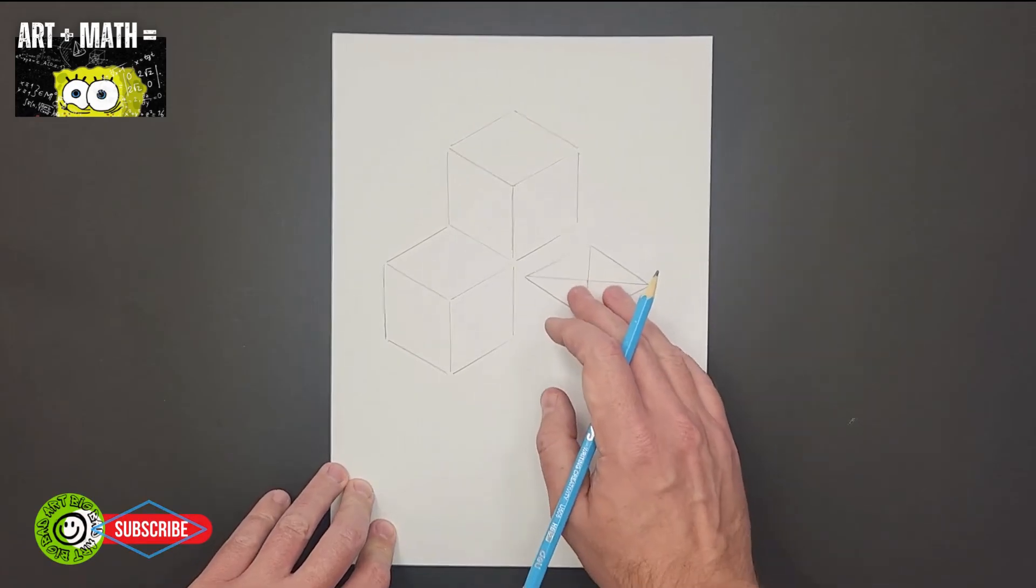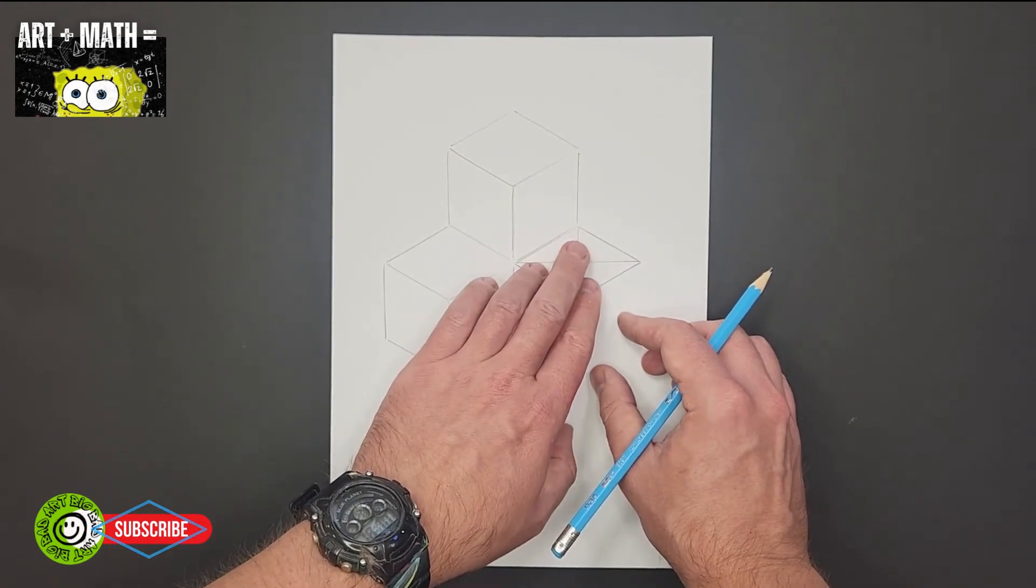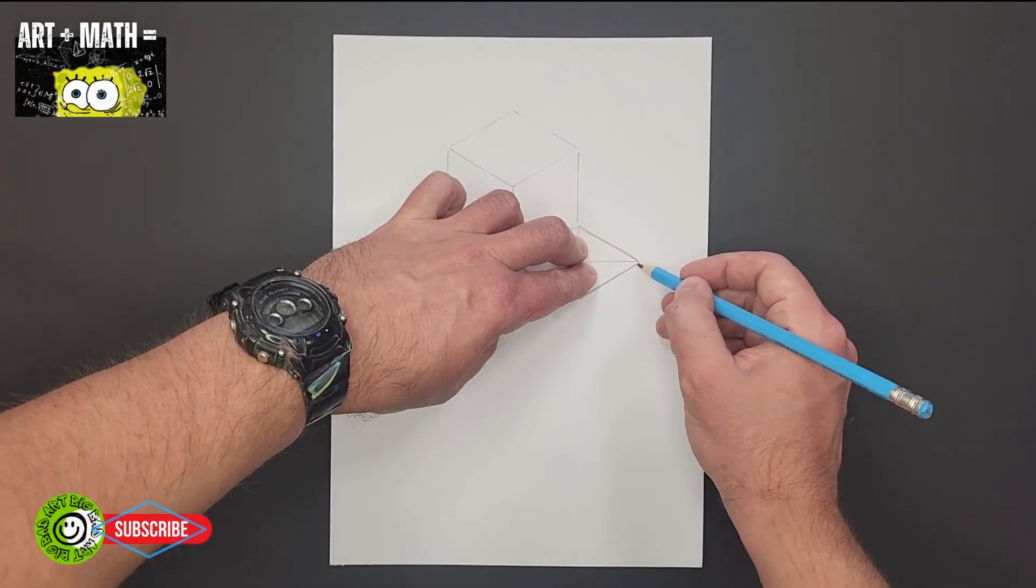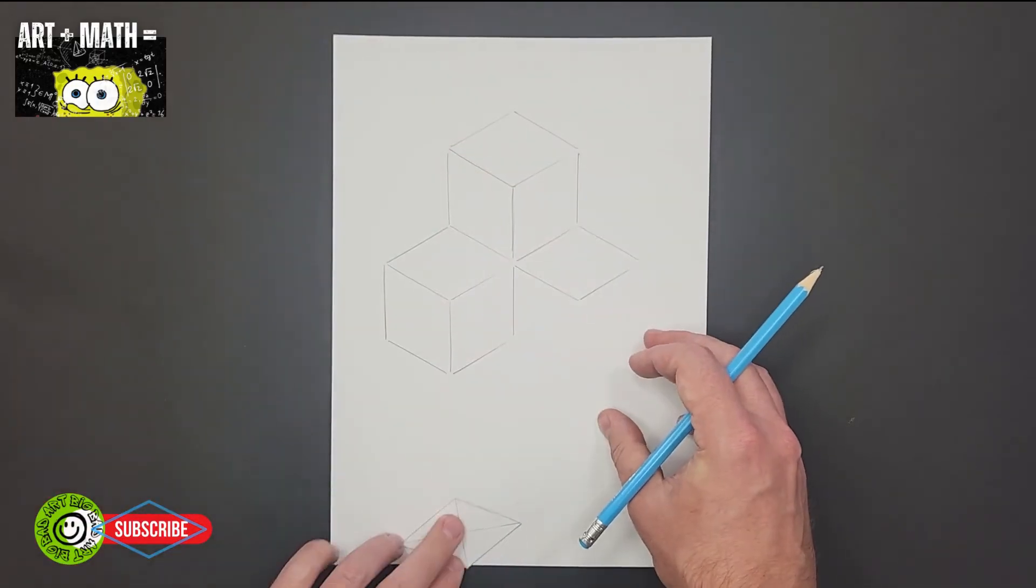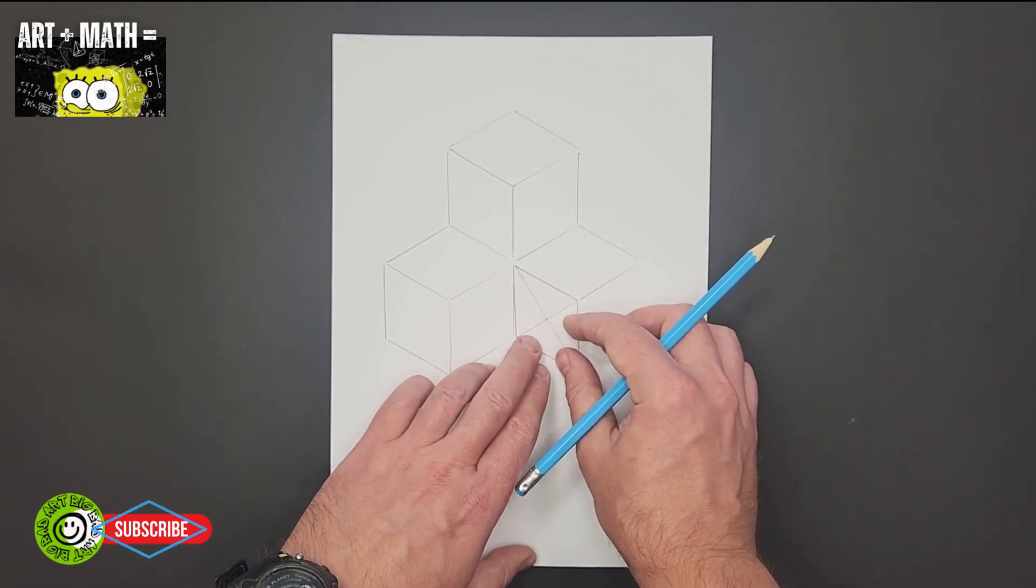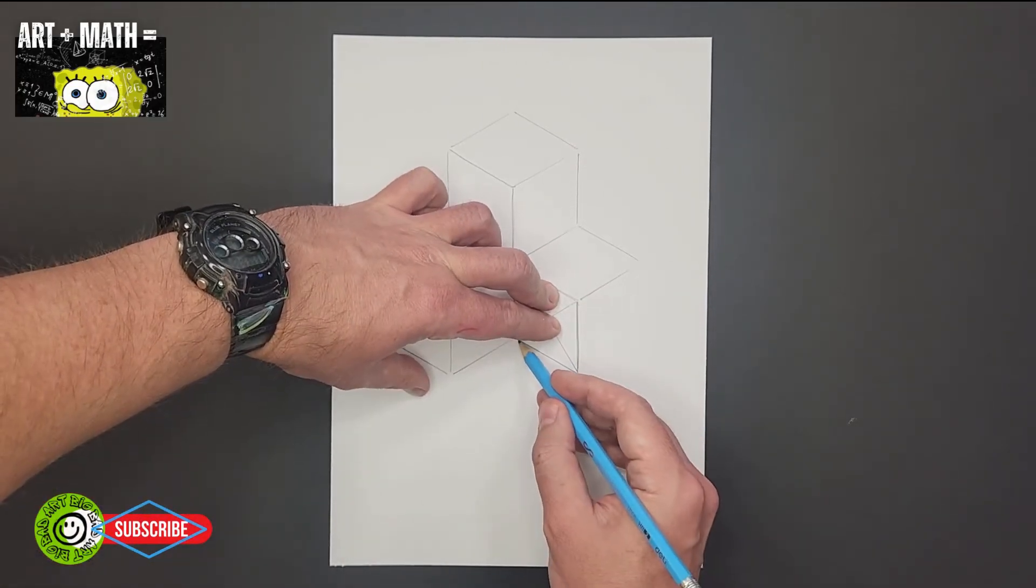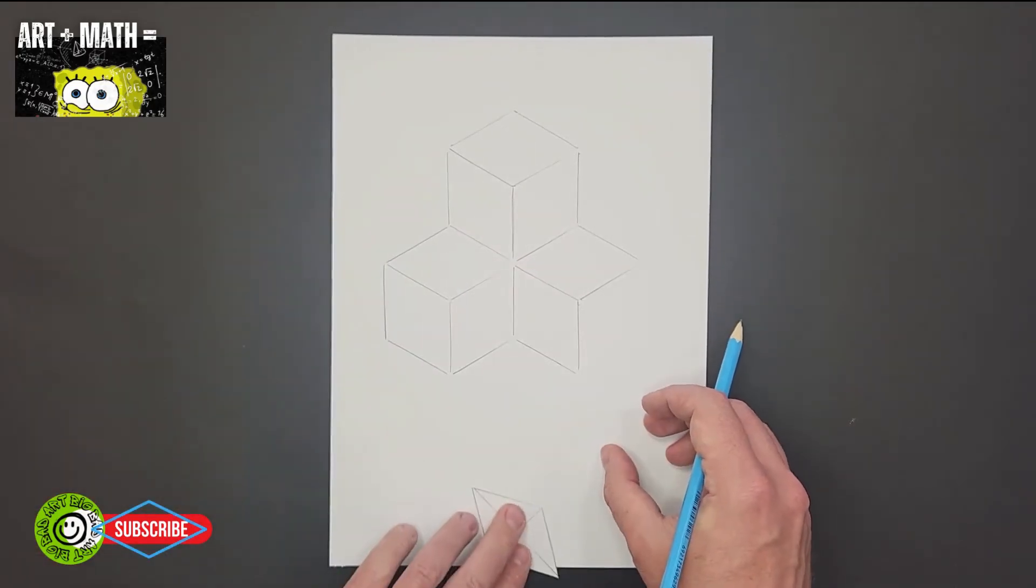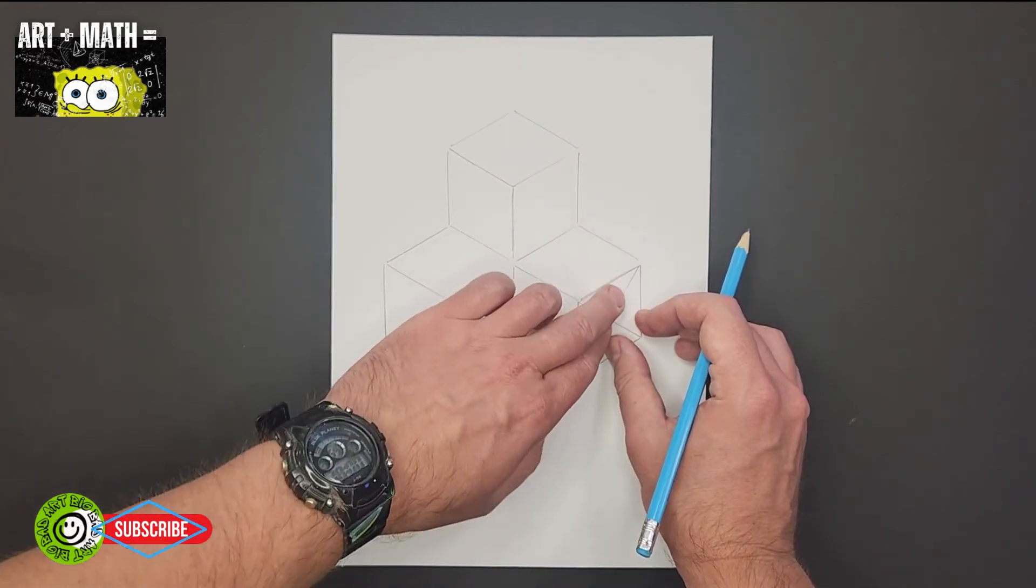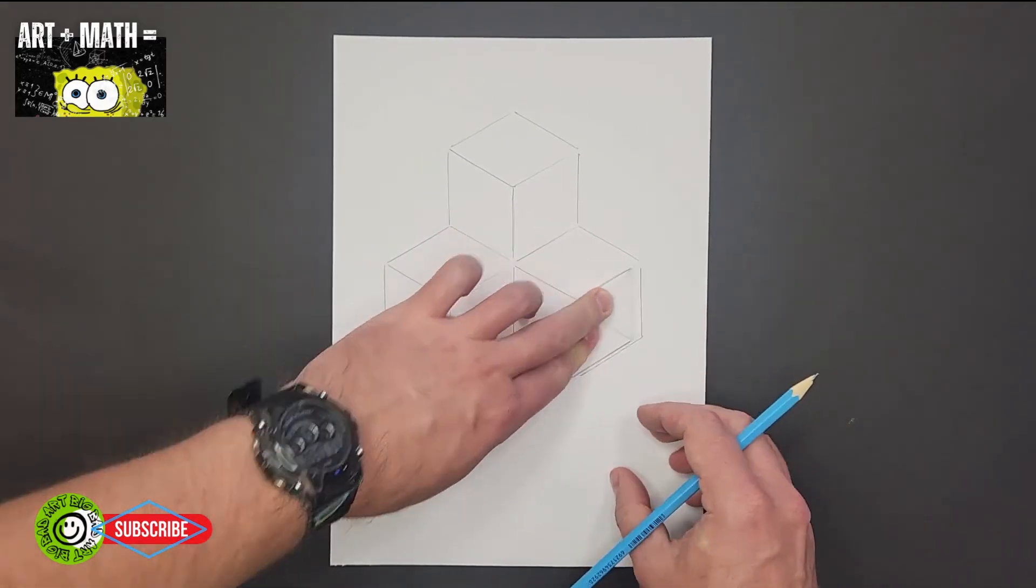And then we go to the right side, come around the rhombus. Okay, like this. And then it should fit here in the middle. Okay, one more here. There you go.